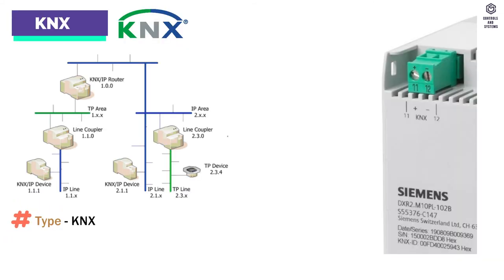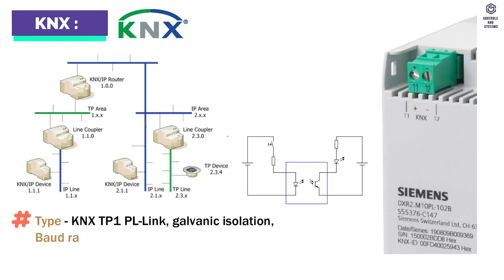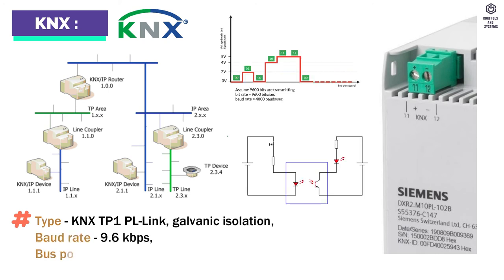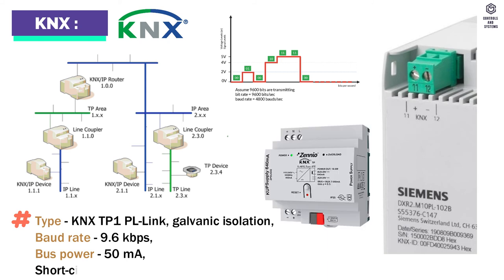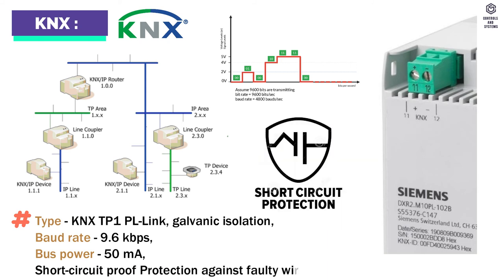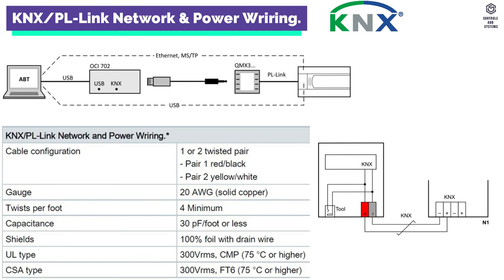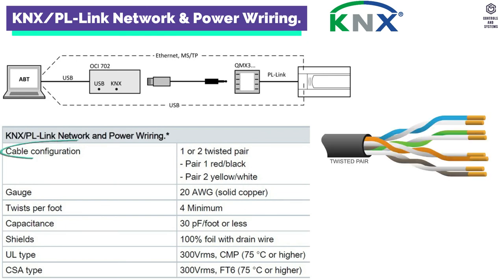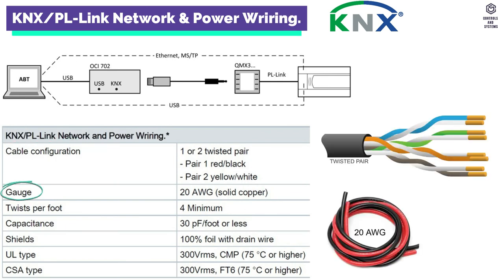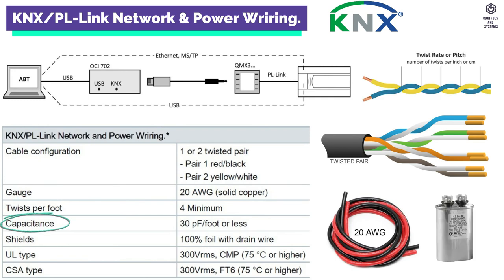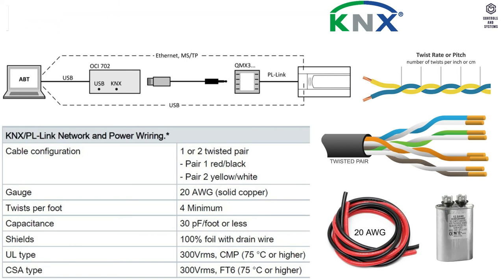KNX: type is KNX TP1 PL link, with galvanic isolation. Baud rate is 9.6 kbps. Bus power is 50 mA. Short-circuit proof protection against faulty wiring at maximum AC 24V. KNX PL link network and power wiring cable configuration gauge, twists per foot, capacitance, shields, UL type, and CSA type are shown in the table.